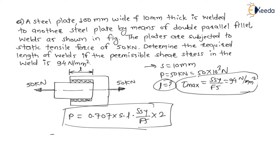Therefore P is given 50 into 10 to the power 3 is equal to 0.707, thickness of weld is given 10, L need to be calculated. SSY divided by factor of safety is nothing but maximum shear stress which is 94 into 2. Now in this equation only L is unknown.